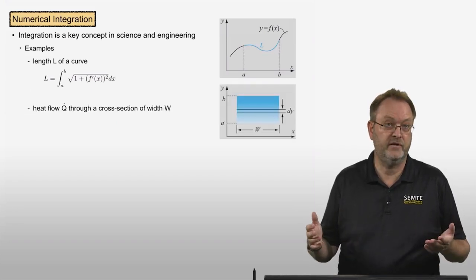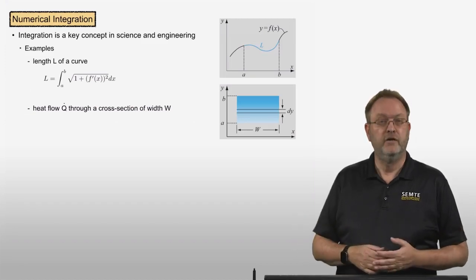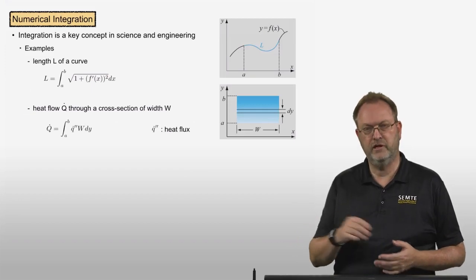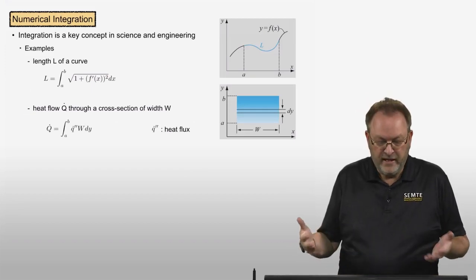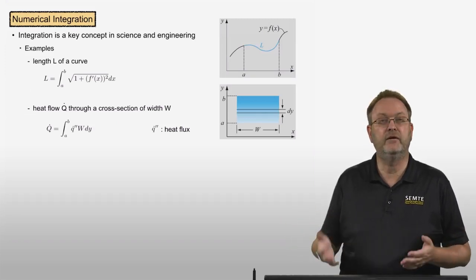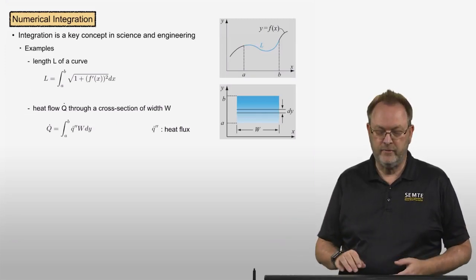Another example is the heat flow q dot through a cross-section of width w, as shown here in the graph. That would be the integral from a to b of the heat flux times the width integrated in the y direction.